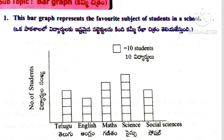Worksheet 4. Here the subtopic is bar graph. Question number 1: This bar graph represents the favorite subject of students in a school. On the x-axis are subjects and on the y-axis is number of students, where each box equals 10 students. Telugu: 40 students; English: 30 students; Maths: 50 students; Science: 60 students; Social: 40 students.